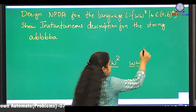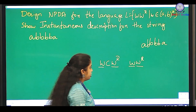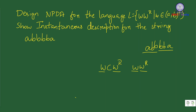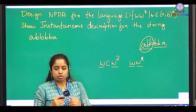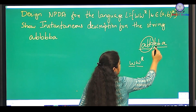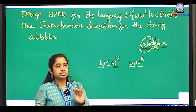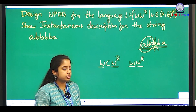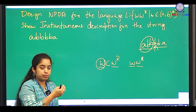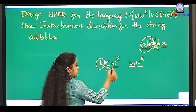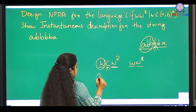For example, in the string 'abbbbba', you are not getting to know when you have to stop pushing elements to the stack and when you have to start popping from the stack. This is one such example where you cannot design a deterministic PDA. In the wcw^r case, it was clear that for all strings belonging to w, you push into the stack, and when you encounter c, you start popping matching elements.